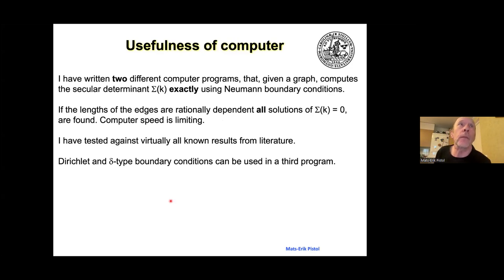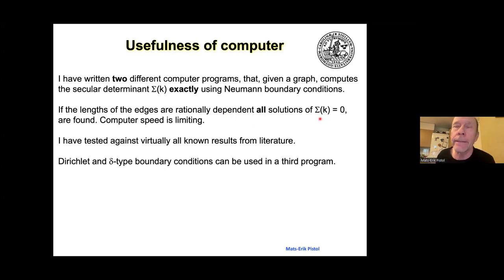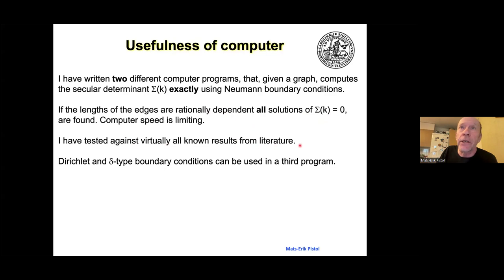Enter the computer. I wrote two different computer programs. If you give it a graph, it computes the secular determinant exactly using Neumann boundary conditions. I did that in order to make sure the software is correct. If the lengths of the edges are of rational dependence, I could find all solutions of sigma(k) equals zero — that is, all eigenvalues — exactly or symbolically. Sometimes I have to solve polynomial equations of high degree, by necessity using numerics. I tested against all known results in the literature to make sure there are no bugs in the program. Then I wrote a third program where I can also use Dirichlet and delta-prime boundary conditions.